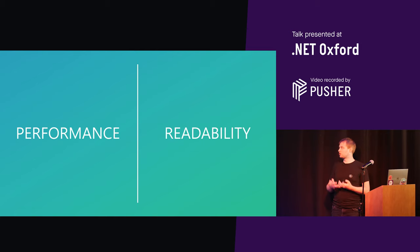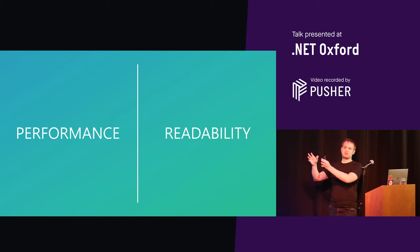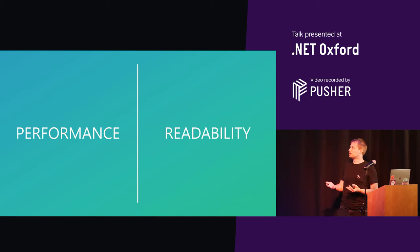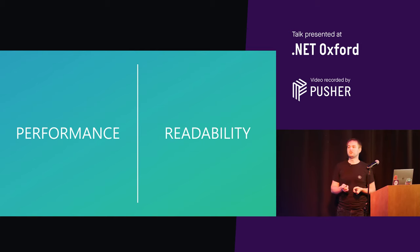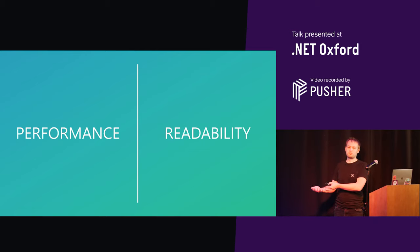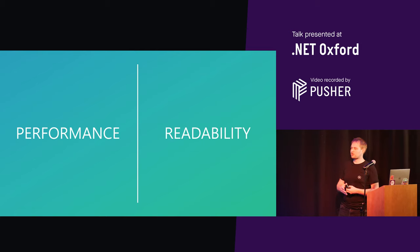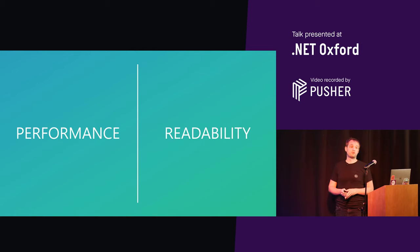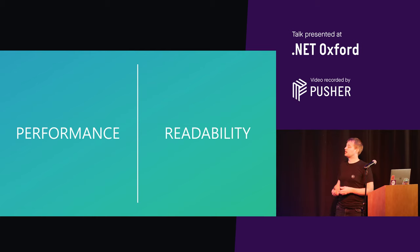If you're building an application that's continually going to have features added to it, developed by lots of different people across lots of different teams, maybe you don't want to spend too much time making it impossible for them to understand that code because the cost there is too high. But if it's a one-off microservice — we're doing a lot of these now where we've got something reading from a queue, processing data, sticking it in a data store, maybe sending a backup to S3 — these services are pretty much designed for that one function. So do be aware of that trade-off and don't just assume that performance is free.